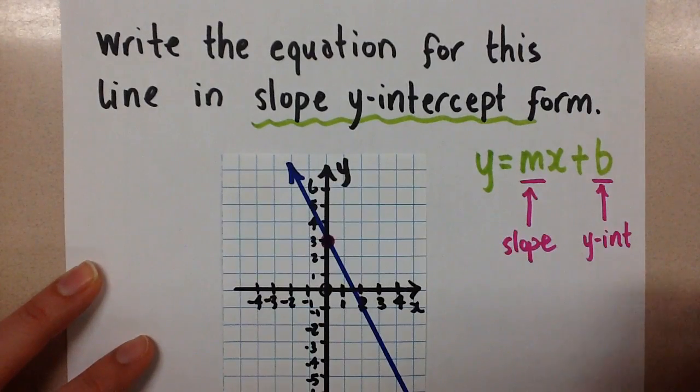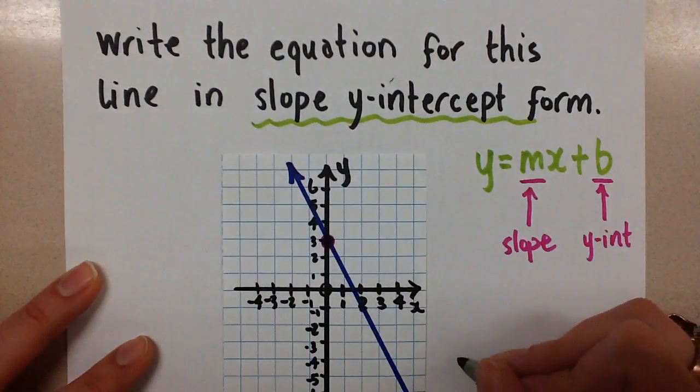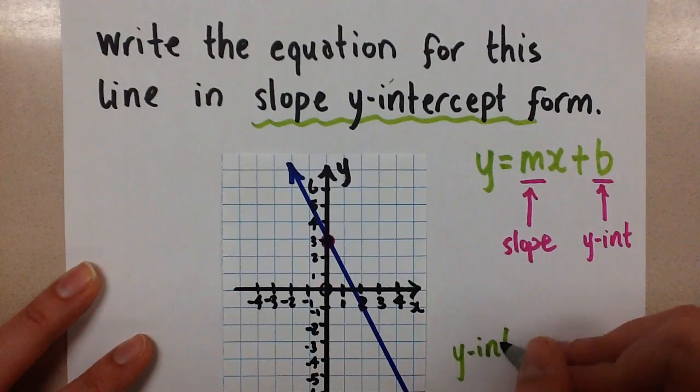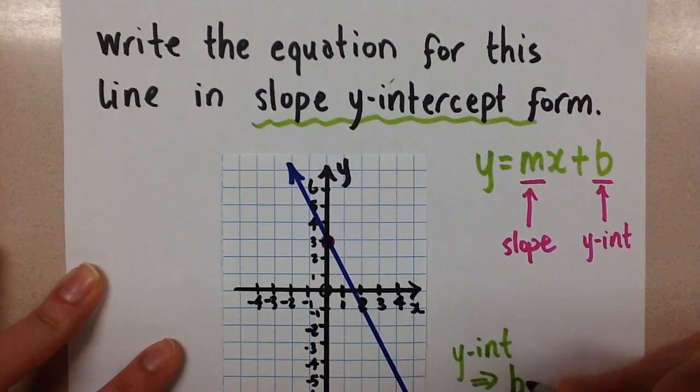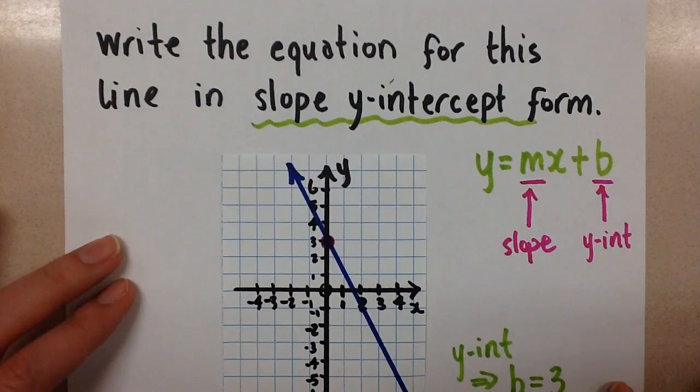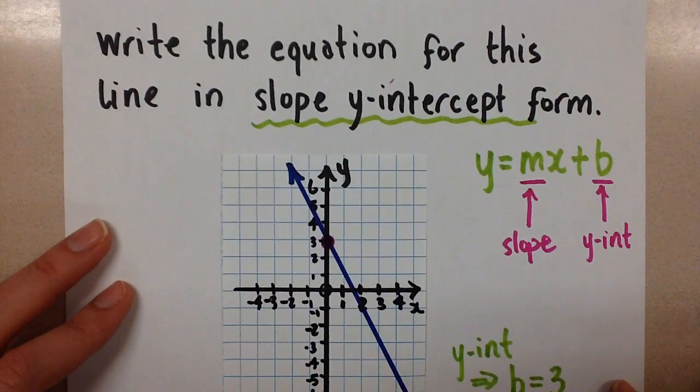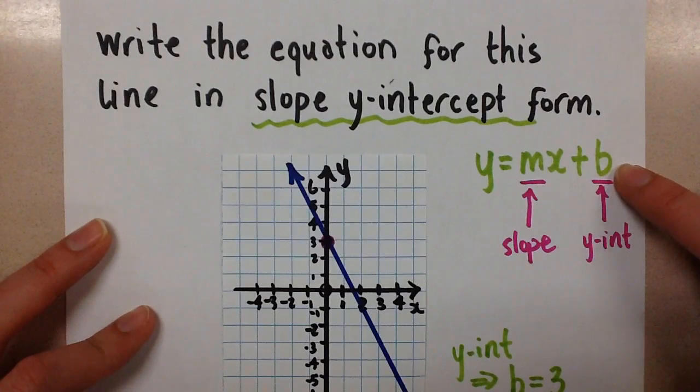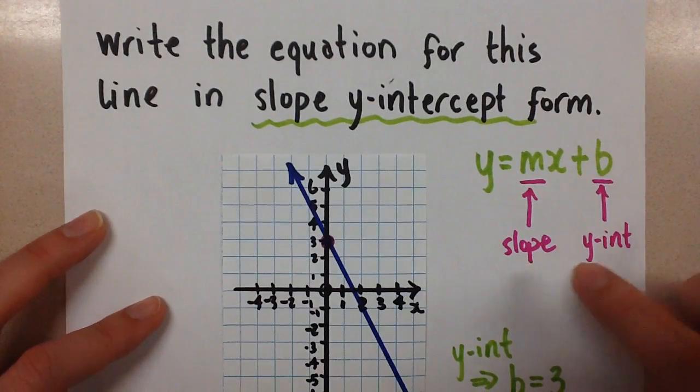So our b value, or our y-intercept in this case, is going to be positive 3, because that is where the line crosses the y-axis. So that's one part of the equation. The other part is the slope.